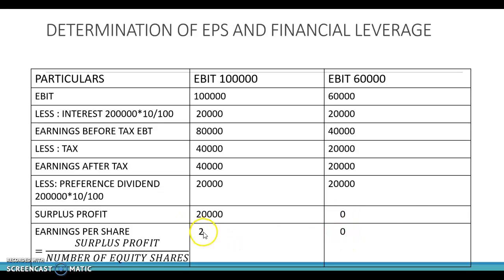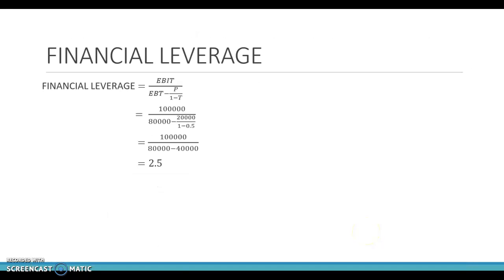Originally EPS was Rs.2 and now it is Rs.0. So when there is a 40% decrease in EBIT, EPS has decreased by 100%. The financial leverage of 2.5 times confirms this, and it is actually a serious problem for the company.